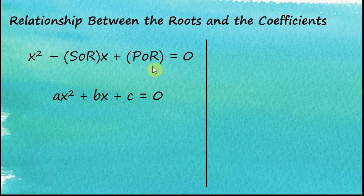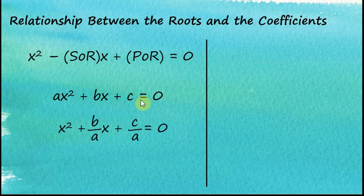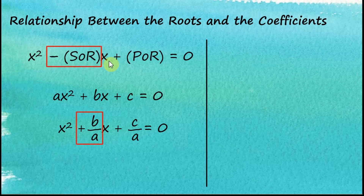We have two equations, and to make them comparable we need to remove a so that the coefficients of x squared are equal to one. To remove a, we divide by a, giving us x squared plus b over a times x plus c over a equal to zero. Comparing the two equations, the coefficient of x is equal to negative sum of roots and also equal to b over a.